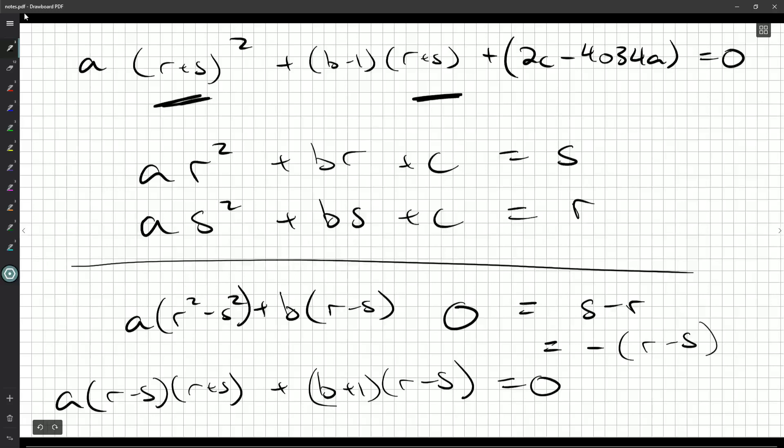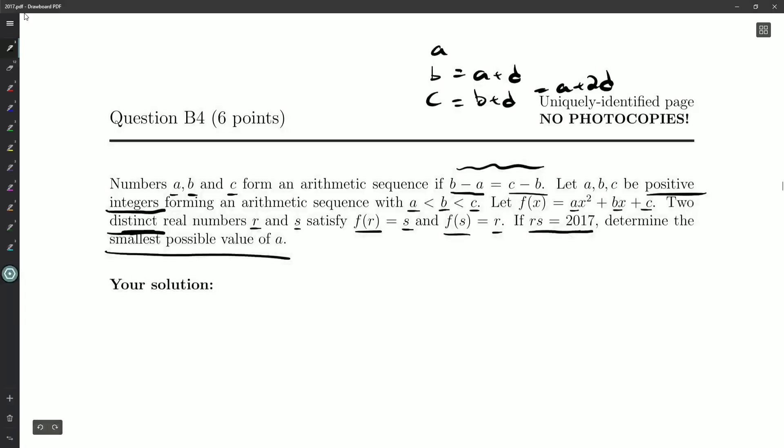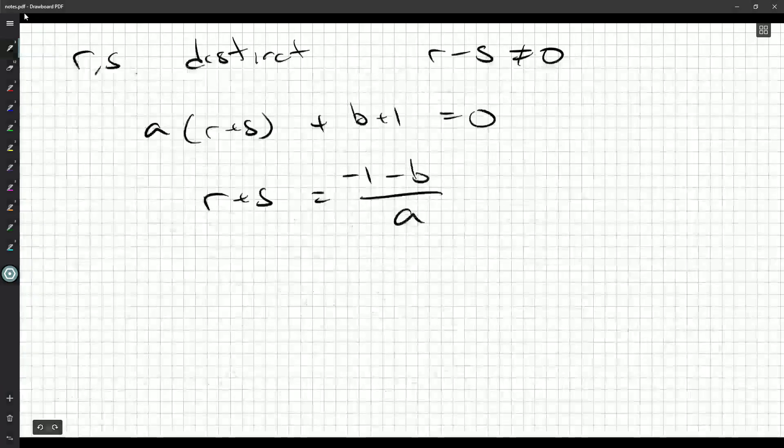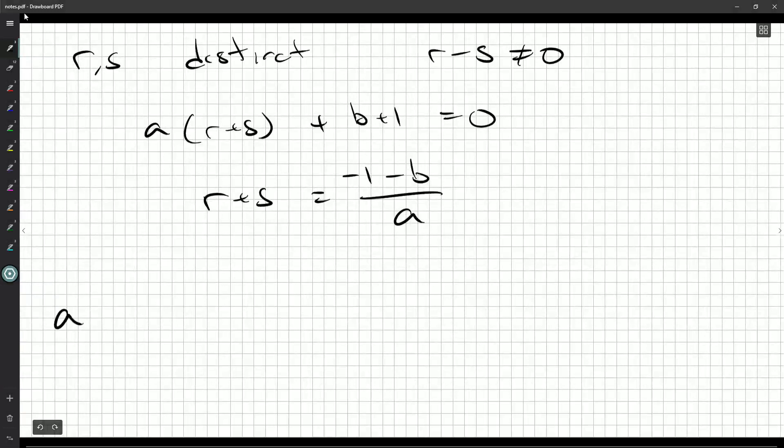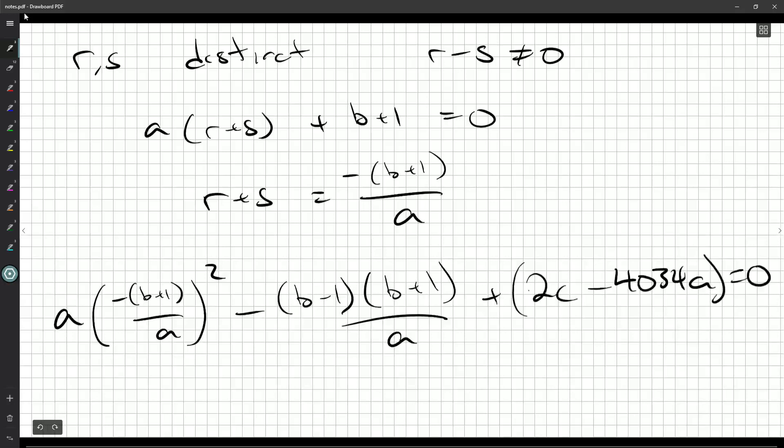And I could take that and plug that in here, get rid of the R's and the S's. I can also get rid of the C's and the B's and we would just have something in terms of A and this common difference D. And that should make sense. We should get one equation with at least two unknowns because we can't solve for A. We just need to determine the smallest possible value for A. So let's plug that in. So we get A negative one minus B over A squared. This is going to be a little difficult to work with. I'm actually going to say it's minus B plus one and this should be a minus sign and then plus two C minus 4034 A.